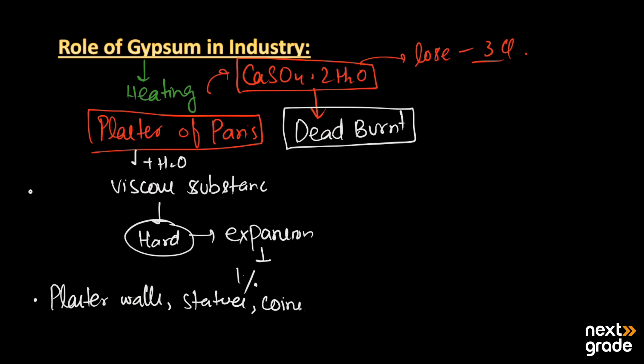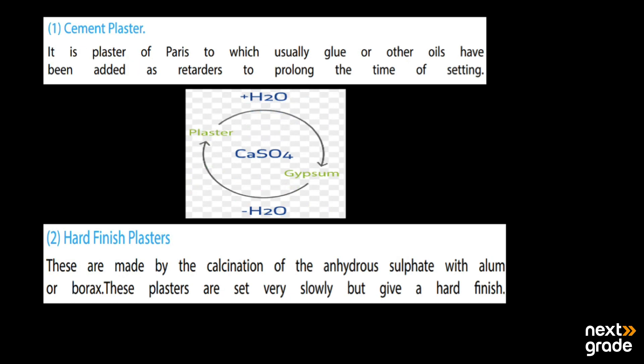This is the simple role of gypsum in industry. Along with that, it is also used in surgery, and Plaster of Paris bandages are available which are used to hold fractured bones. Next we have cement plaster - it is Plaster of Paris to which glue or other oils have been added to retard or prolong the time of setting.